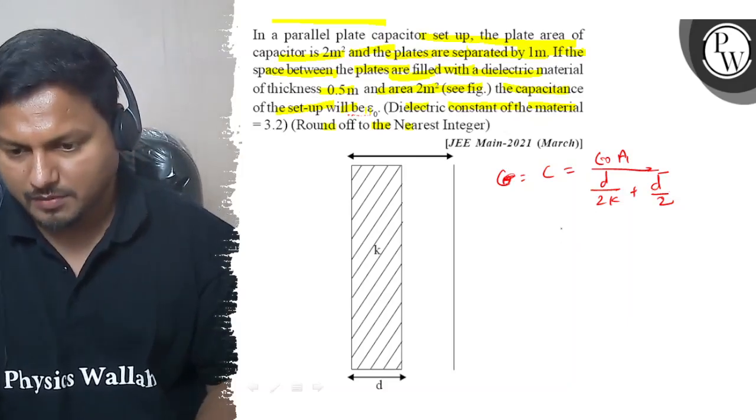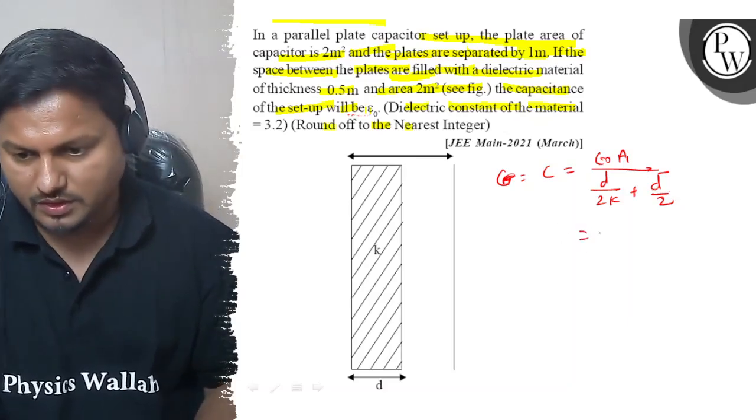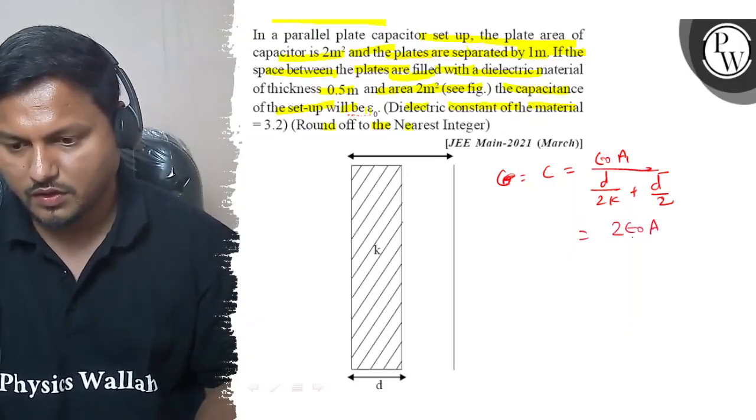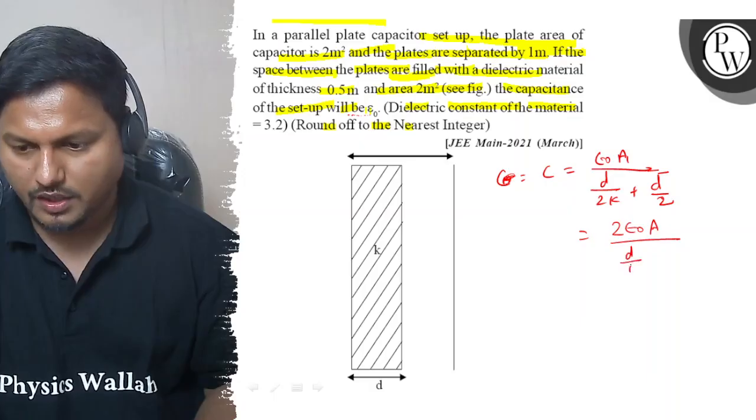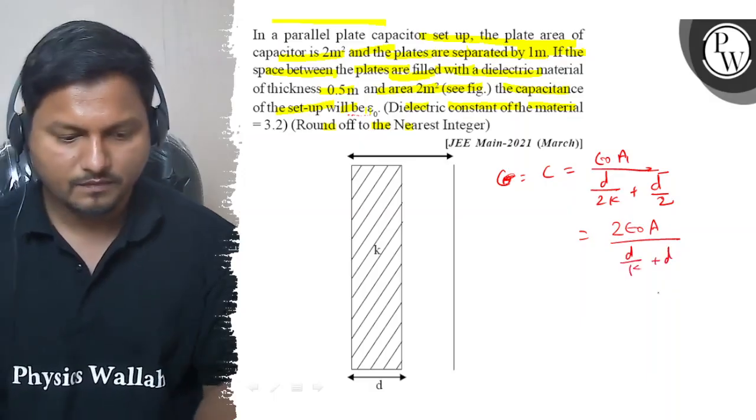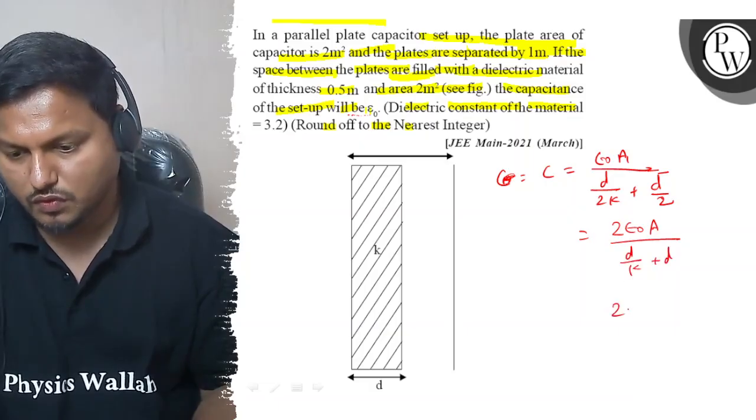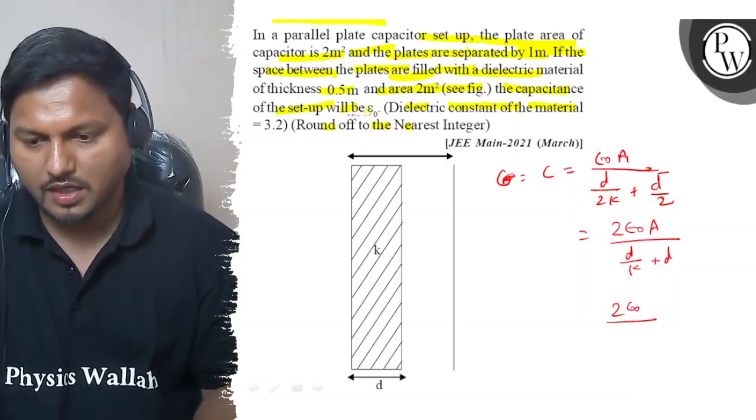If we multiply by 2, this will become 2 epsilon 0 into area by d by k plus d. If we put the area as 2, that means 2 into epsilon 0 upon d.